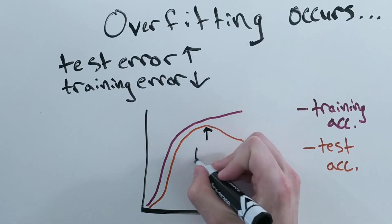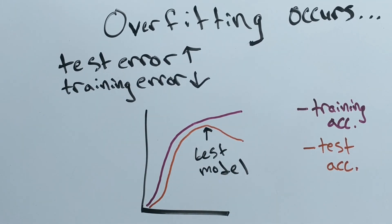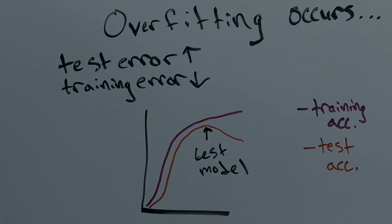Your best model then is the model at this point where accuracy is the highest on the test set, and not over here where the accuracy is the highest on the training set.